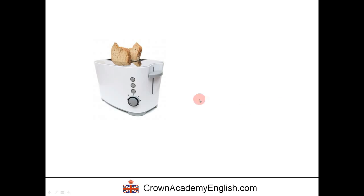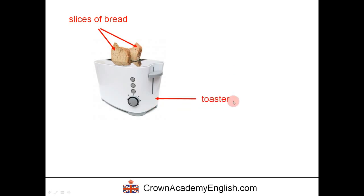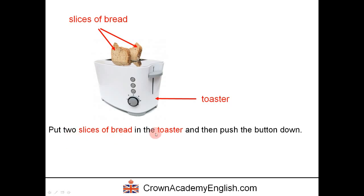Here is a very common object, particularly in England and the United Kingdom. We start with slices of bread — this is a slice of bread. The object is called a toaster, an electrical toaster. We put two slices of bread in the toaster and push the button down. After a few minutes the toast pops up.